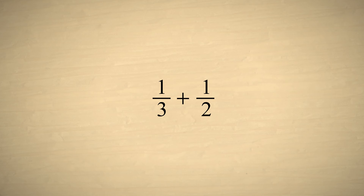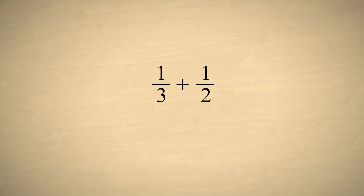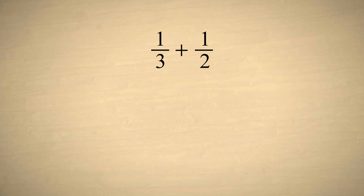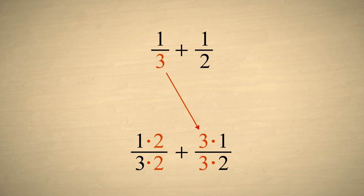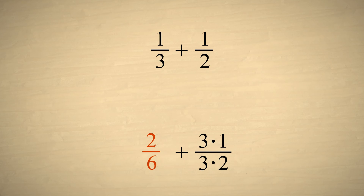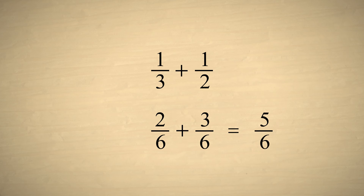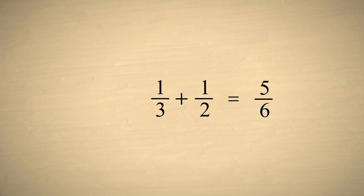When adding or subtracting two fractions, the simplest way to create a common denominator is by multiplying the numerator and denominator of each fraction by the other fraction's denominator. In our example, both the numerator and the denominator of the fraction one-third were multiplied by two, which was the denominator of the one-half. And the numerator and denominator of the one-half were both multiplied by three, the denominator of the one-third. So we multiplied the top and bottom of each fraction by the other fraction's denominator. This gave us two-sixths plus three-sixths, which is five-sixths. So we found that one-third plus one-half is equal to five-sixths.